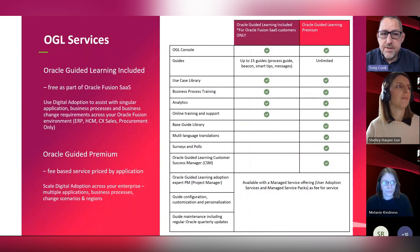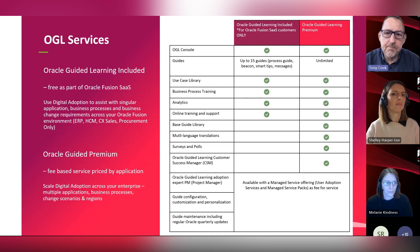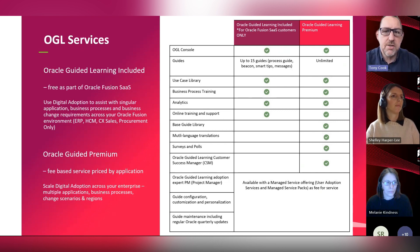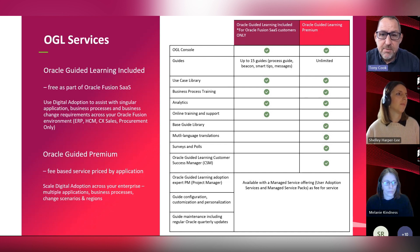To clarify the differences between Oracle Guided Learning Premium and Oracle Guided Learning Included: the Included version is the free version as part of Fusion applications. Any Oracle Fusion user can request for it to be activated and configured. Within that you get the console where guides are developed, up to 15 concurrent guides at any one time, a use case library, business process training, analytics, and online training and support from Oracle.